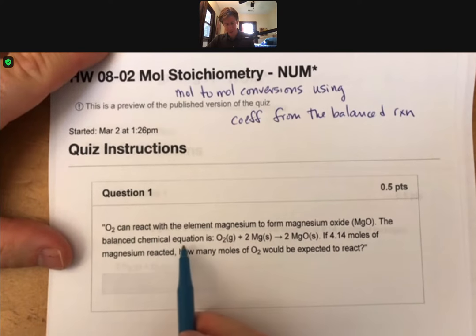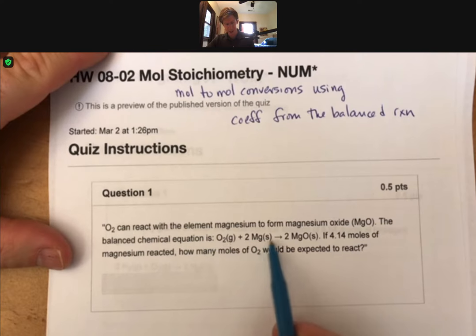The balanced chemical equation is O2 gas plus 2Mg solid react to produce 2MgO.